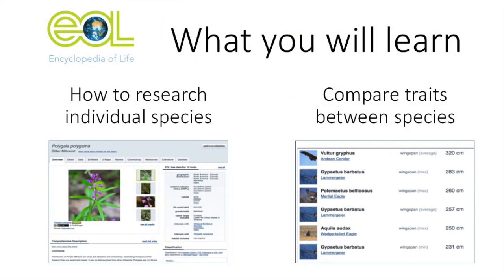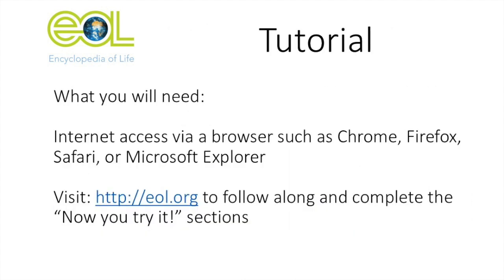This tutorial is designed to help you learn how to use the Encyclopedia of Life to do research about different species that will help you complete your biology or other life science class projects and papers. You will learn how to use the Encyclopedia of Life to find articles, maps, video, audio, and photographs about specific species. You will also learn how to compare traits between different species. To follow along with this tutorial, make sure you have access to the internet via browser.